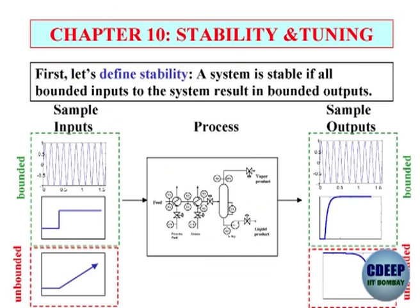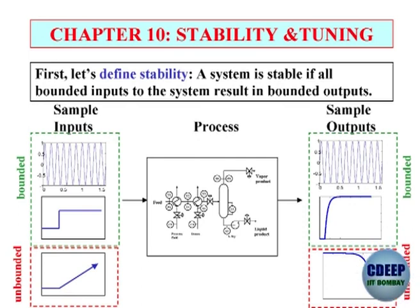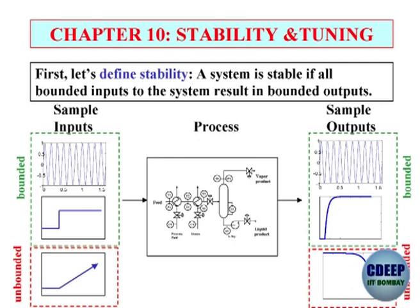First, you define stability. There are many ways of defining stability. We use the definition of bounded input, bounded output — BIBO stability, which you might have learned from other courses: a system is stable if all bounded inputs to the system result in bounded outputs. An important implication is that you cannot conclude the system is stable because you have given one bounded step input or sinusoidal input and the output is bounded. You cannot conclude bounded input, bounded output stability from your simulation.